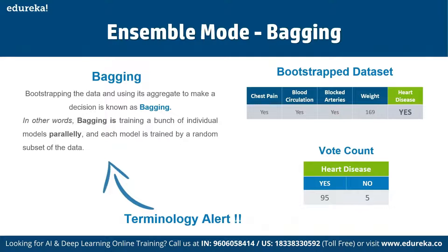This brings us to bootstrapping and bagging. Bootstrapping is an estimation method used to make predictions on a dataset by resampling it. To create a bootstrap dataset, we randomly select samples from the original dataset. Importantly, we can select the same samples more than once. For example, a bootstrap dataset may include: chest pain yes, blood circulation yes, blood arteries yes, weight 169 — giving a count of yes=95 and no=5.